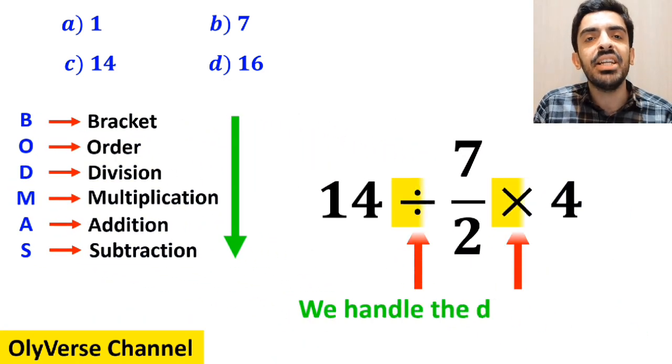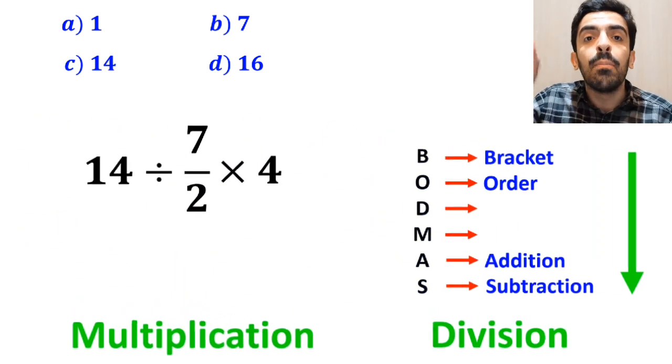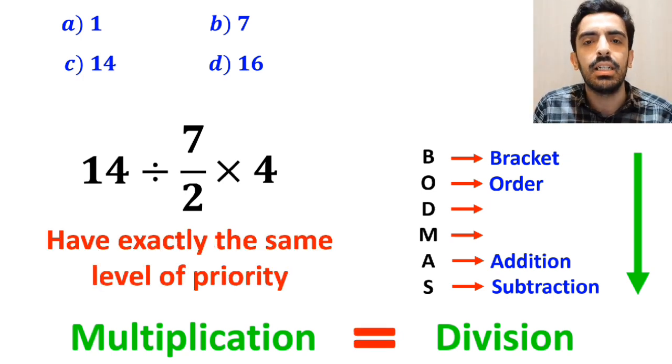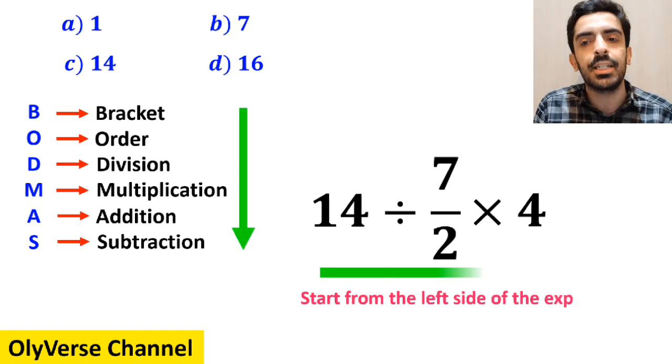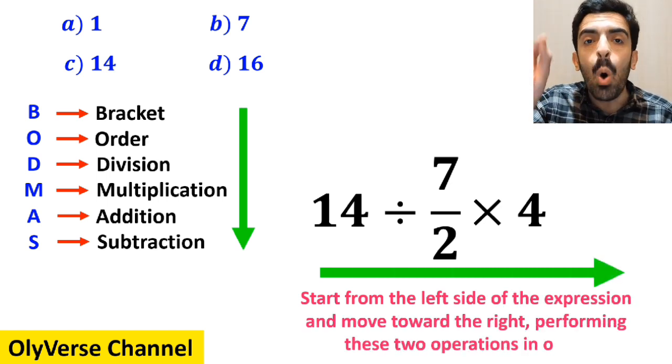In the next step, we handle the division and multiplication. However, it's very important to note that in the BODMAS rule, multiplication and division have exactly the same level of priority. In this situation, the best thing to do is to start from the left side of the expression and move toward the right, performing these two operations in order.